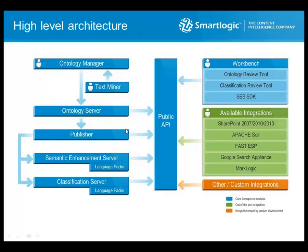Kept for last as it is the subject of this webinar: at the bottom left of the architecture diagram is the triple store — the graph database. The publisher commits the ontology to the graph in the same transaction covering the semantic enhancement server and the classification server, ensuring all users and enterprise applications are always presented with the very same version of the ontology, regardless of which component they access. The classification server output — RDF or RDFA — can be distilled and ingested into AllegroGraph.